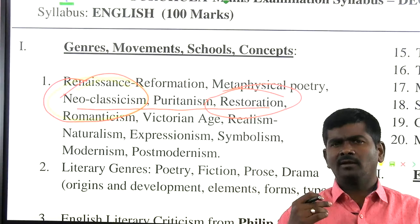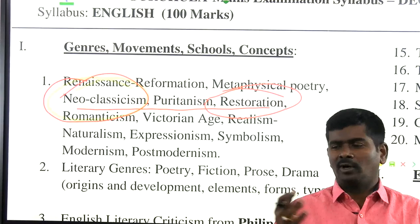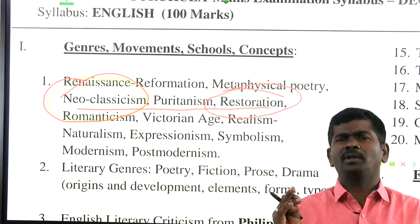Another school is the Transitional School of Poetry, also called Pre-Romantic Poetry — Oliver Goldsmith, William Blake, William Cowper, George Crabbe, and James Thomson are the popular transitional poets.